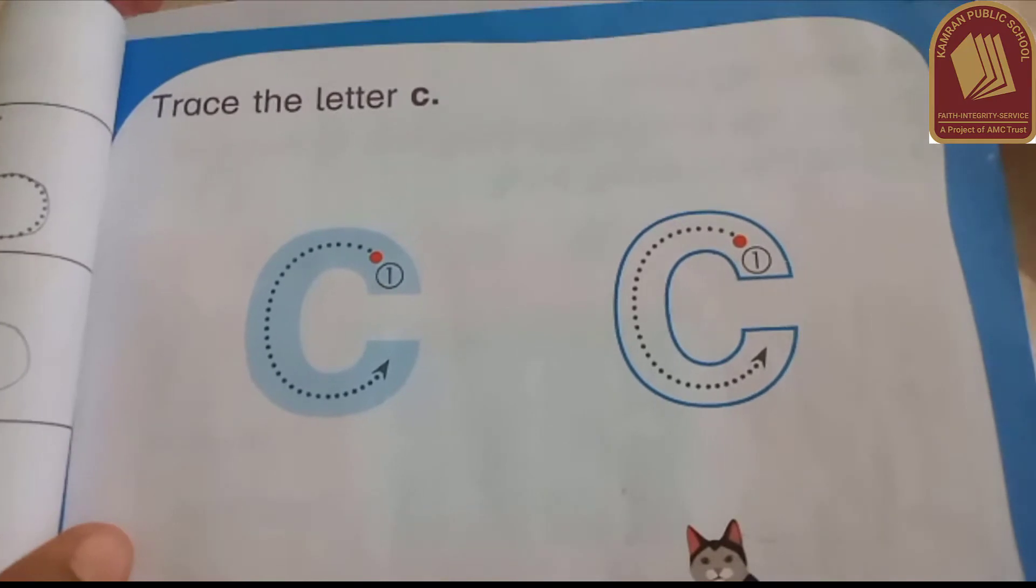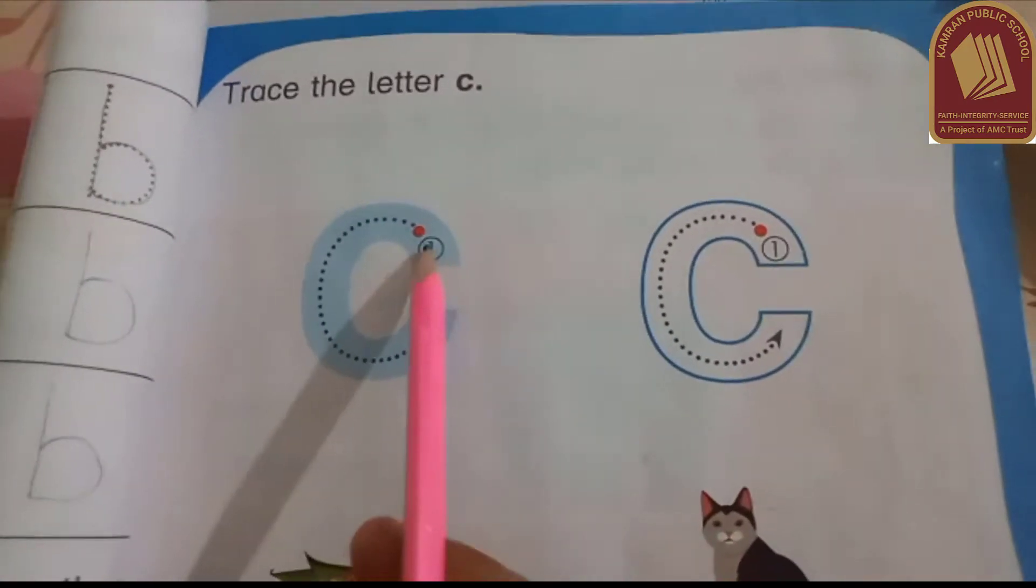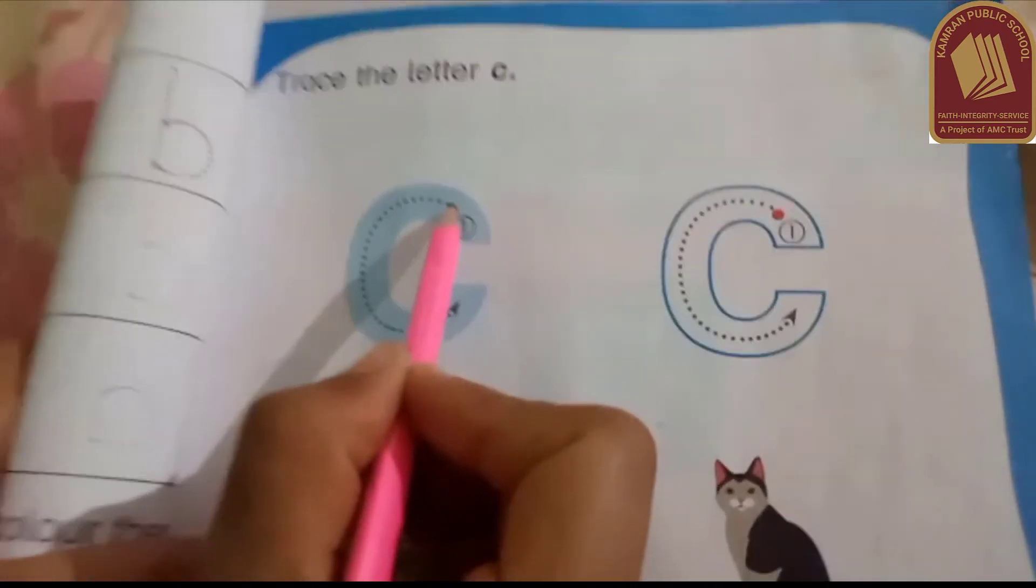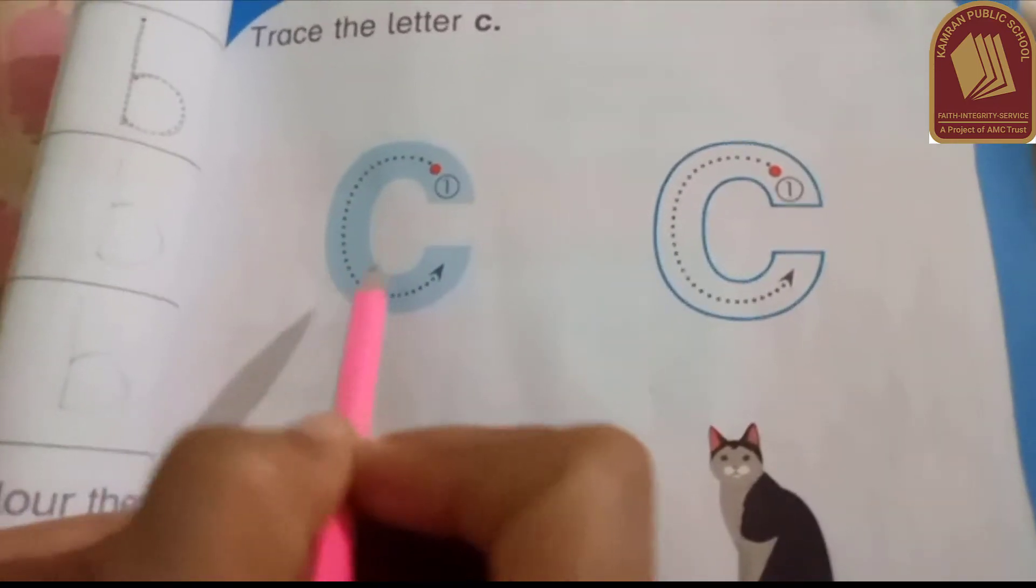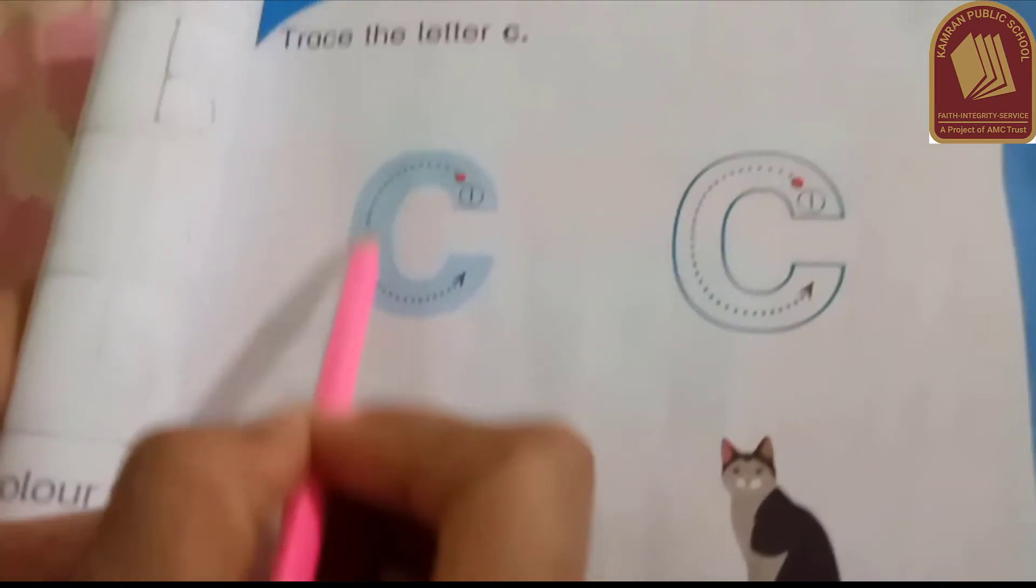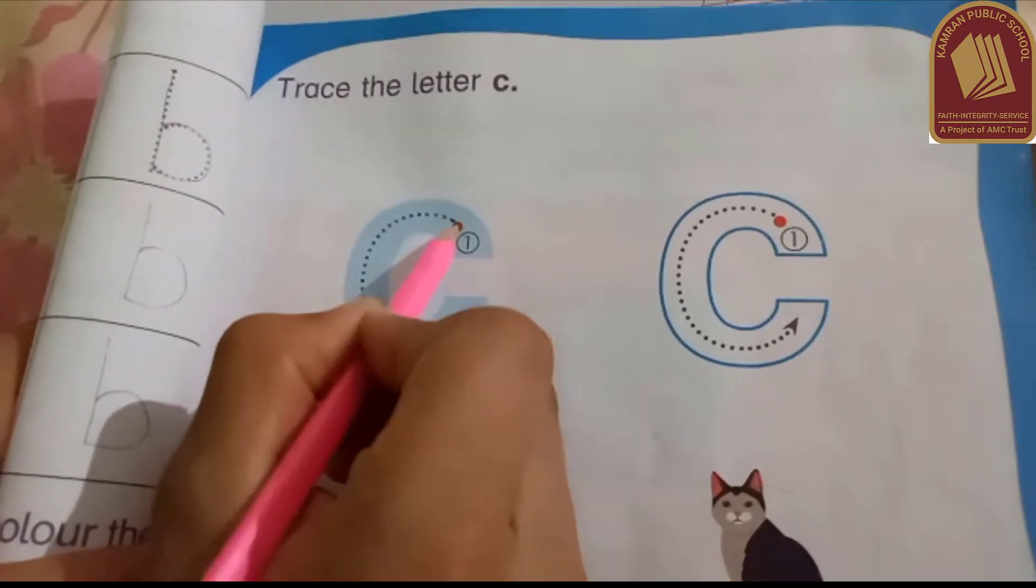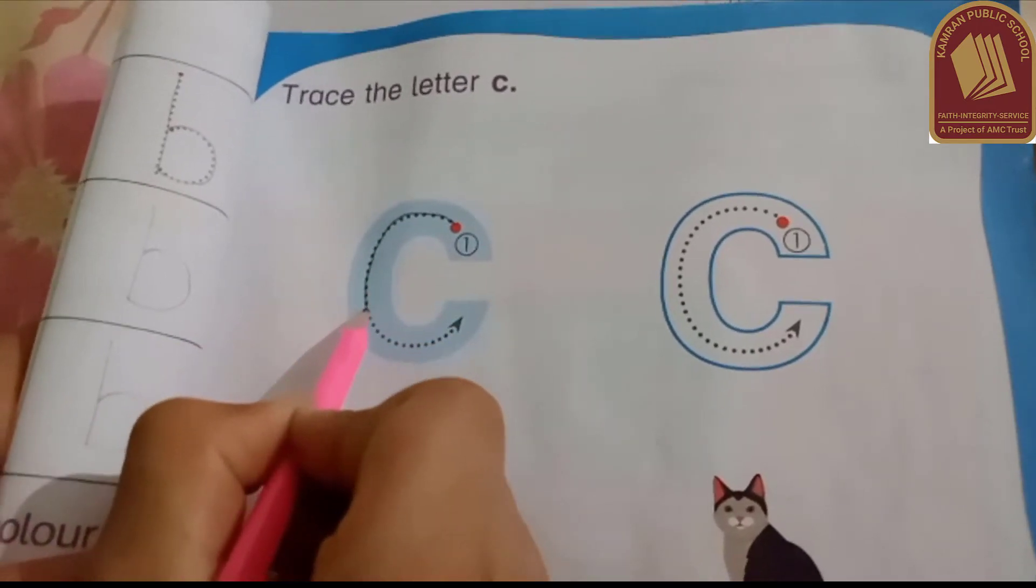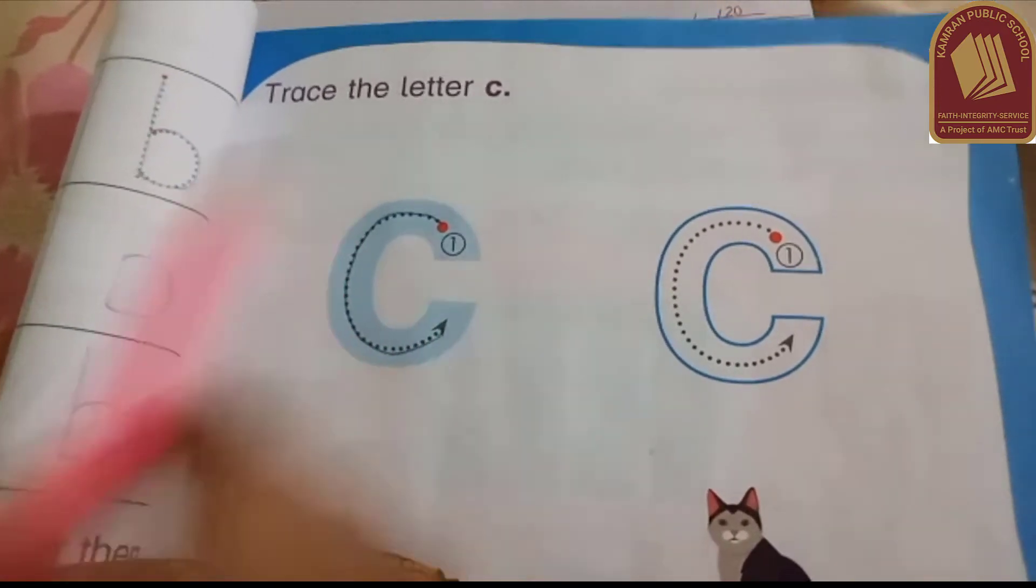Assalamualaikum dear students, today we are going to learn letter C. This is letter C. We will start from the red dot and add the arrow. It looks like a curve. This is a curve.